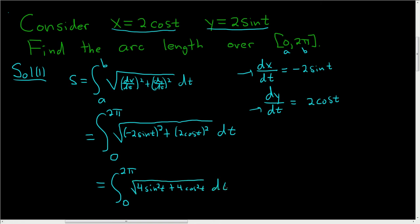So we have to somehow integrate this. So let's factor out a 4. So 0 to 2π, this will be the square root of 4, square root of sin² t + cos² t dt.